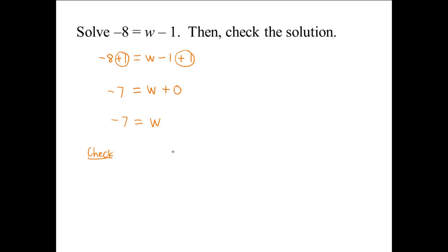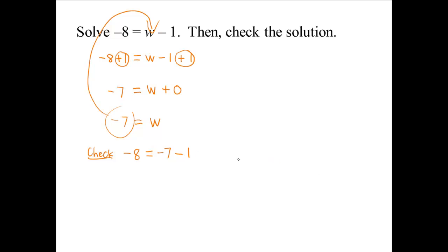In order to check, we take negative 7 and put it back into the equation wherever we see w. The equation reads negative 8 equals negative 7 minus 1. This is indeed a true statement: if you have negative 7 and take away one more, you have negative 8.